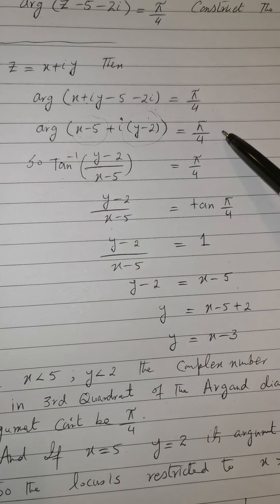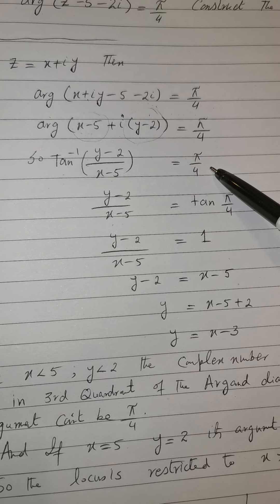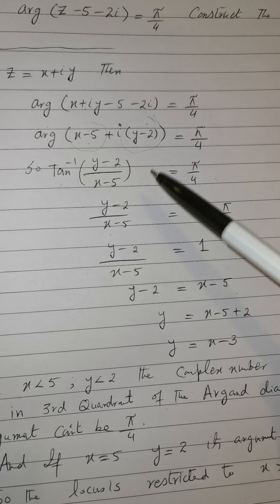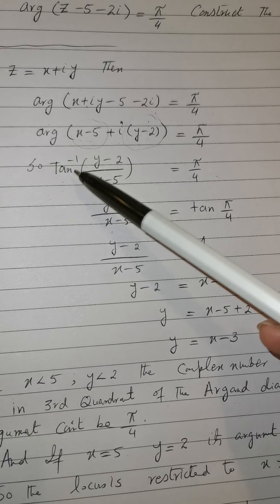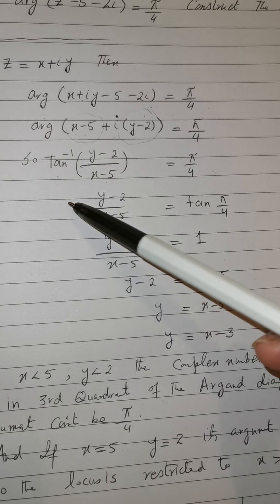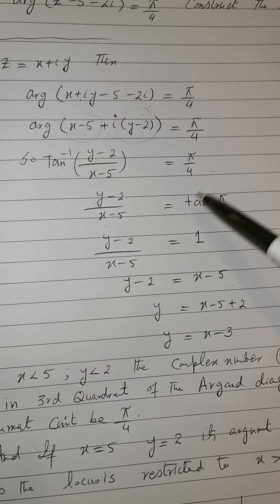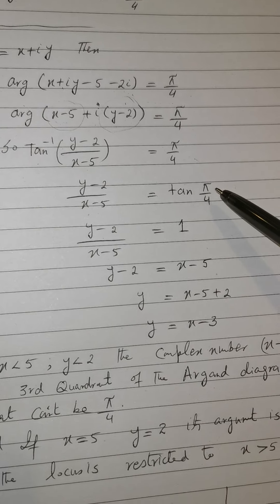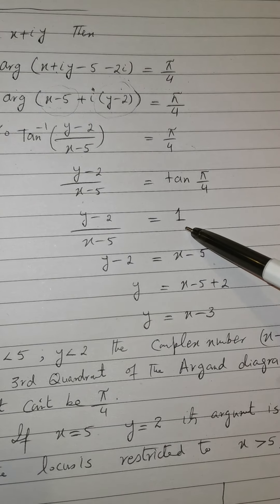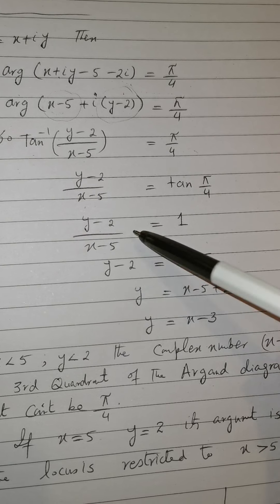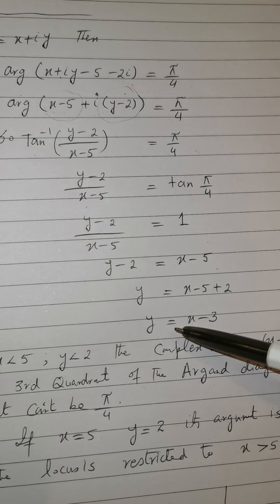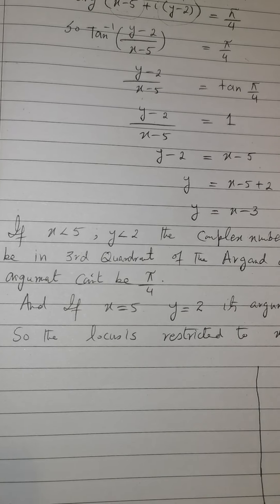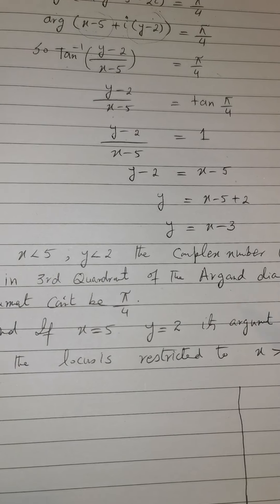The argument is π/4 as given. Applying tan to both sides, tan⁻¹ cancels and we get tan(π/4), which equals 1. By cross multiplication, we get y − 2 = x − 5, so y = x − 3.